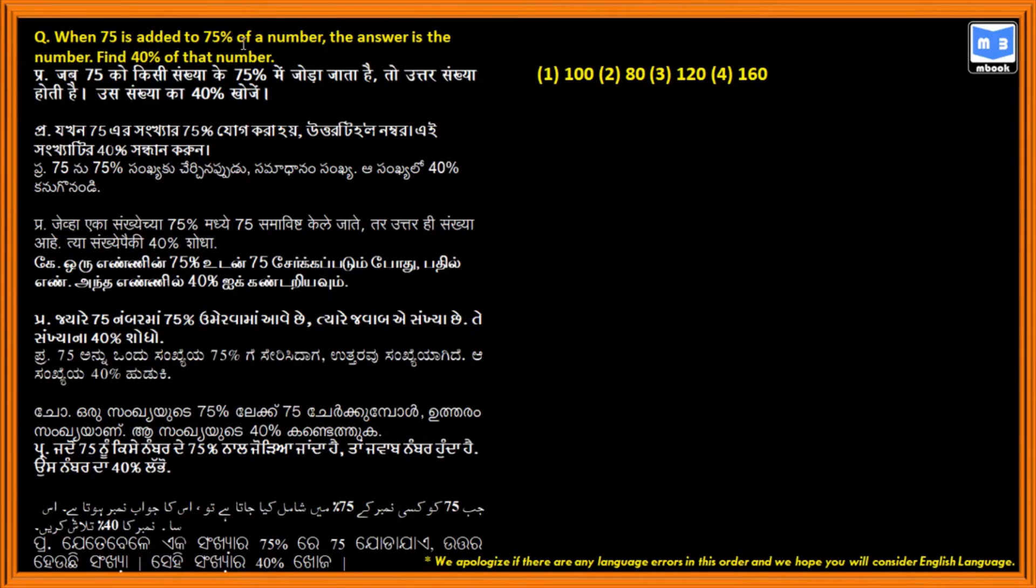When 75 is added to 75% of a number, the answer is the number. Find 40% of that number. When 75 is added to 75 percentage of a number, we don't know that number, so we consider X. The answer is that number is X. Find the 40 percentage of X.